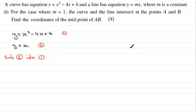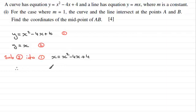Equating them means replacing y with x, so we'd have x equals x squared minus 4x plus 4. We've got a quadratic equation, so we need to rearrange to make it equal to 0. Taking x from both sides gives us x squared, then minus 4x minus another x which is minus 5x, plus 4 equals 0.